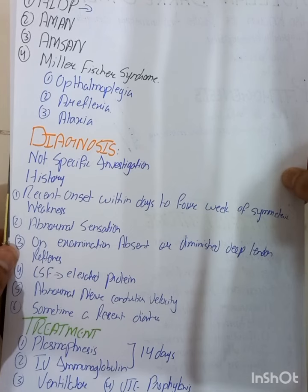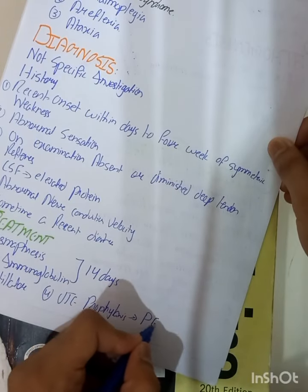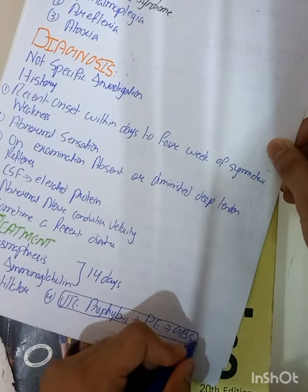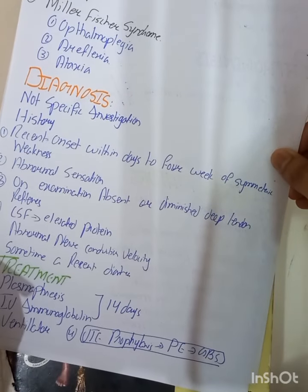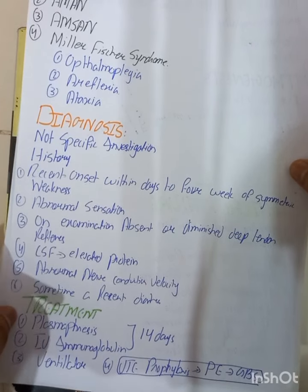In cases of respiratory failure, endotracheal intubation for mechanical ventilation is required. VTE prophylaxis — venous thromboembolism prophylaxis — is also important, because this disease increases the risk of venous thromboembolism, which can lead to pulmonary embolism — the most common cause of death in Guillain-Barré syndrome. Low molecular weight heparin is given for VTE prophylaxis.